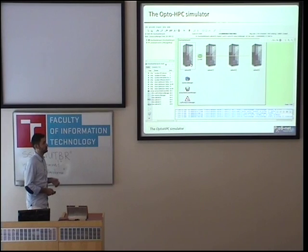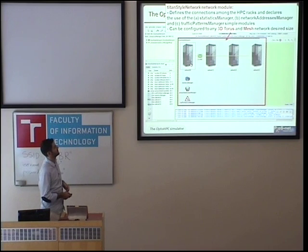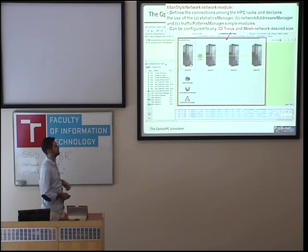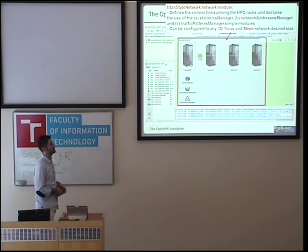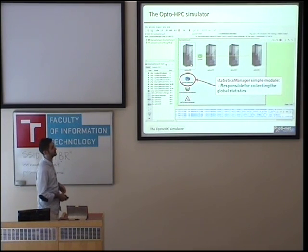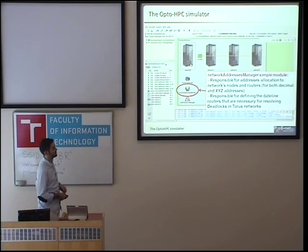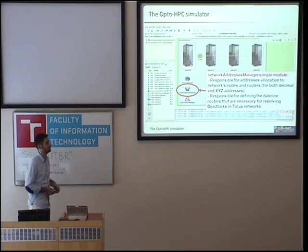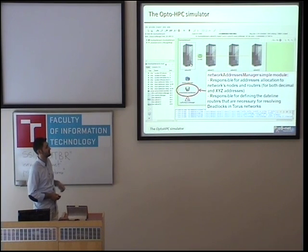Now I will briefly introduce you to the architecture of our simulator. Here you can see the basic network module, which defines the connections among the HPC racks. As we can see in this example, we have four racks, and it declares the use of three auxiliary simple modules. It can be configured to any 3D torus or mesh network sizes — the two topologies currently supported by our tool. Here you can see the statistics manager simple module, responsible for collecting the global statistics of the simulation, and the network addresses manager, which allocates addresses to the network nodes and routers. It runs at the initialization stage and is also responsible for defining the dateline routers necessary for resolving deadlocks in torus networks.